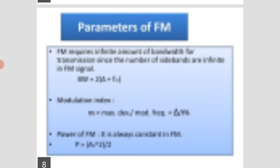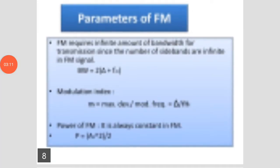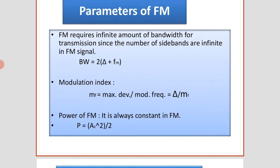The parameters of FM: FM requires an infinite amount of bandwidth for transmission, since the number of sidebands are infinite in an FM signal. Bandwidth of FM is equal to 2 × (Δf + FM), where FM is the modulating frequency. The modulation index MF is equal to maximum deviation divided by modulating frequency, that is MF = Δf / FM.